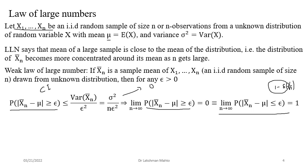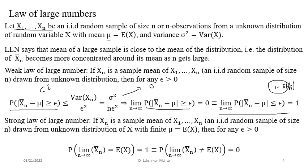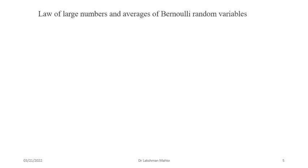Any sample you take will fall within epsilon distance of the true mean — that is the Weak Law of Large Numbers. The Strong Law of Large Numbers has a stronger version: the sample mean converges to the true mean in an almost sure sense. So the Weak Law is established via convergence in probability, and the Strong Law is established via almost sure convergence.